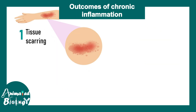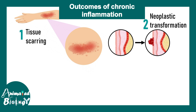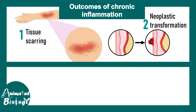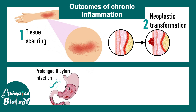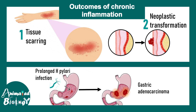What are the outcomes of chronic inflammation? The outcomes include tissue scarring and sometimes neoplastic transformation. For example, H. pylori infection can lead to gastric ulceration or duodenal ulcers. If H. pylori infection is untreated and persists long-term, it can lead to gastric adenocarcinoma, which is detrimental. This helps us understand the molecular and cellular players underlying chronic inflammation.